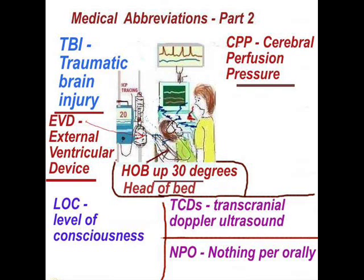HOB: head of bed up 30 degrees. LOC: level of consciousness. CPP: cerebral perfusion pressure, which is measured by taking the MAP — the mean arterial pressure — and subtracting the ICP, the intracranial pressure. That number references the amount of blood perfusing to the brain.